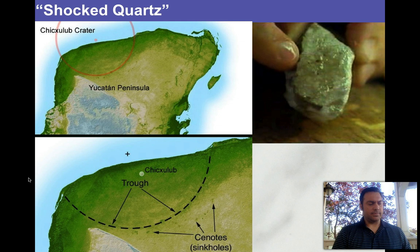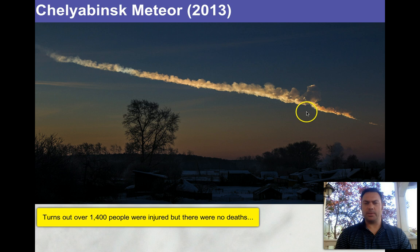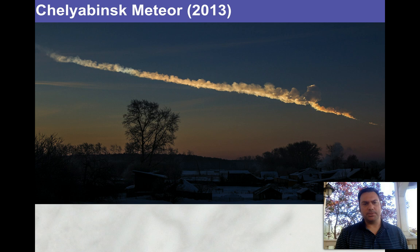These things happen all the time — a meteor exploded in the skies above Russia, with blast effects killing people, the explosion equivalent to an atomic bomb or two. There was another event earlier in the 20th century also in Russia that leveled huge zones of trees; if it had hit a city it would have vaporized it. Meteors impact all the time.